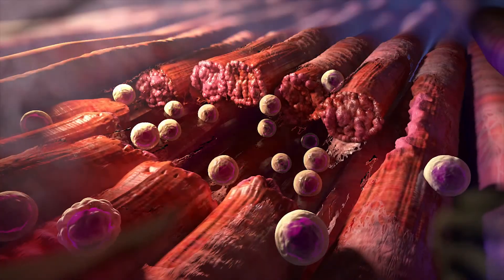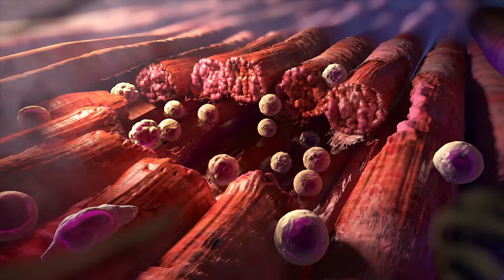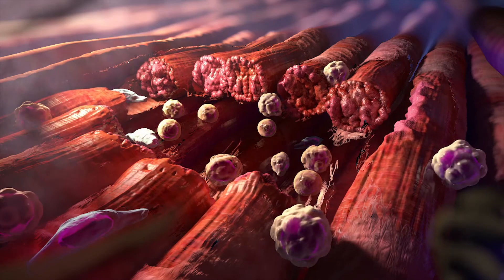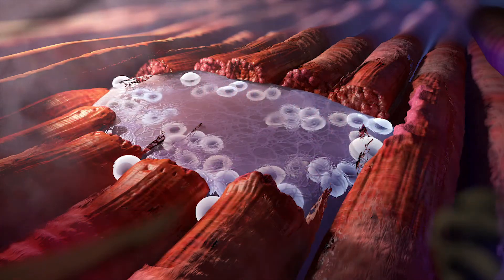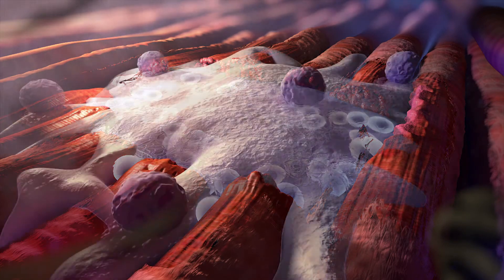Excessive BMP signaling, along with other mechanisms, misdirects the recruited stem cells to differentiate into cartilage. The cartilage is then replaced by bone.